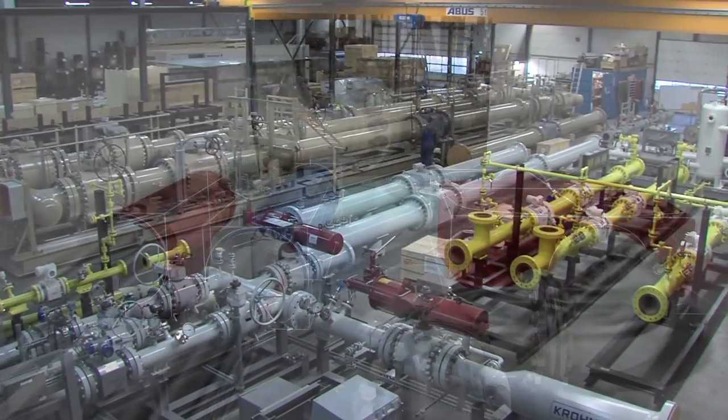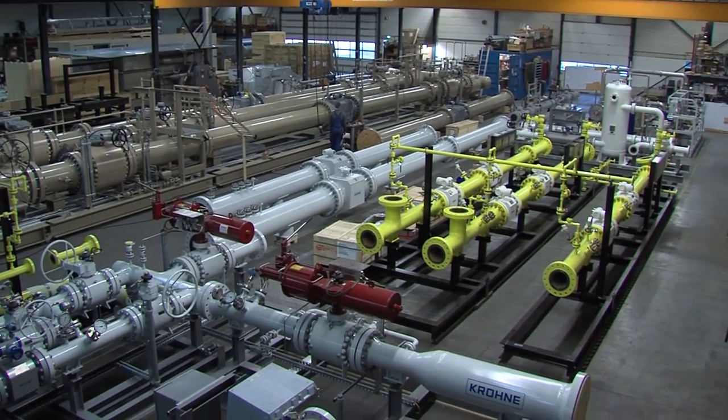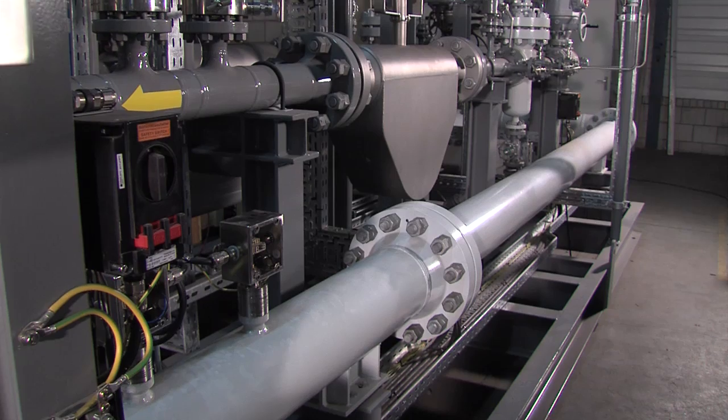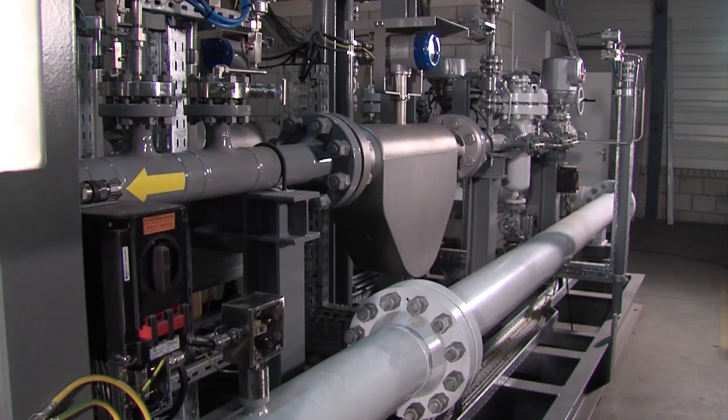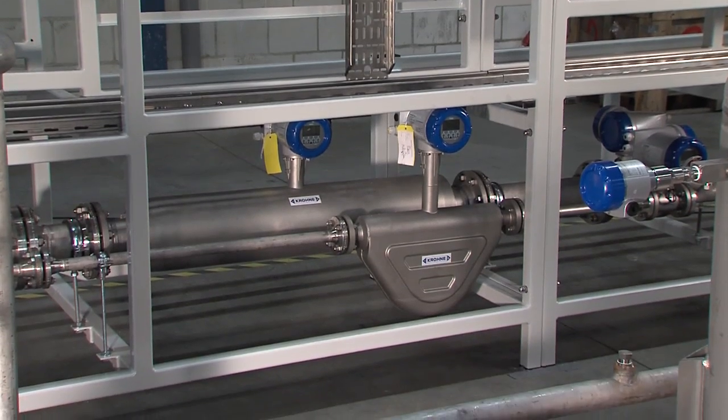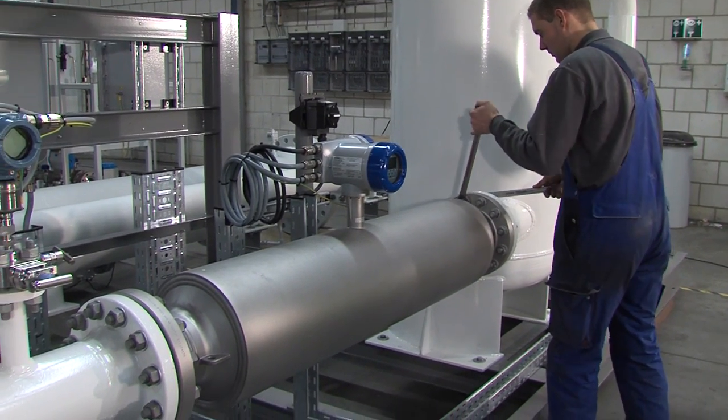Krona offers a complete end-to-end turnkey flow meter skid solution, from design, manufacture, calibration, commissioning, training, and lifetime product support. All metering skids are fully integrated and enable compact installations with no straight inlets or outlets required.